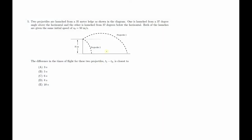Two projectiles are launched from a 35 meter edge, as shown in the diagram. One is launched from a 37 degree angle above the horizontal, and the other is launched from 37 degrees below the horizontal.